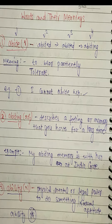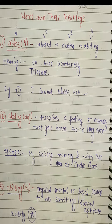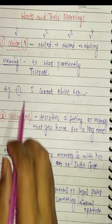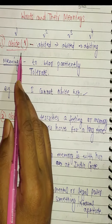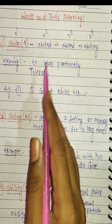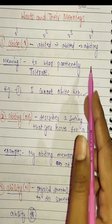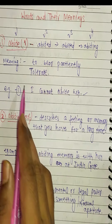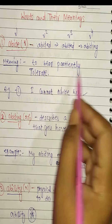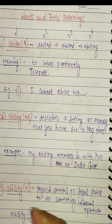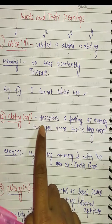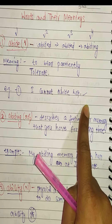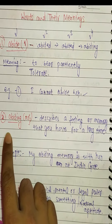Welcome back to my channel English Room. Today we are going to talk about words and their meanings. The first word is 'abide', used as a verb. Second form is 'abided', third form is 'abided', fourth form is 'abiding'. The meaning is to bear patiently or tolerate something. Example: I cannot abide her — it means she cannot tolerate her.